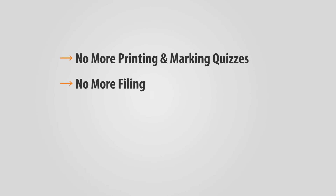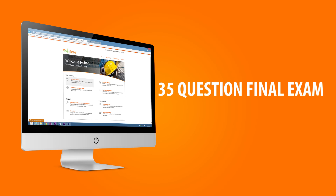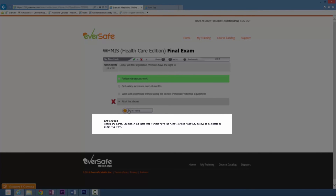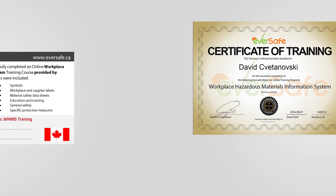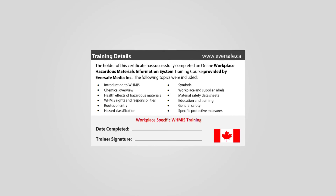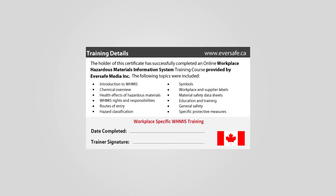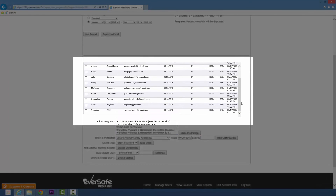This means no more printing and marking quizzes, no more filing, no more wondering who's completed WHMIS training, and no more searching through files to find evidence of training if you're ever visited by your local legislative body and asked to provide proof. Every WHMIS course concludes with a 35-question final exam that tests workers on the required WHMIS knowledge they've learned. Workers get immediate feedback after submitting their answers, explaining clearly the rationale behind the question and the answer. When they finish their exam, they're awarded a wallet certificate and a wallet card displaying what information they learned. If your local health and safety inspector requests proof of training for one or multiple workers, you can pull it up in just a few clicks.